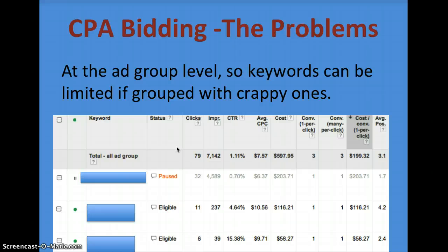So CPA bidding — the problem is that bid changes are made at the ad group level, so keywords can be limited if grouped with other poorly performing keywords. Here's an example from one of our client accounts — this is a CPA bid ad group. These keywords are in the same ad group, and for this date range one had a conversion for $203, one for $116, and one for $58.